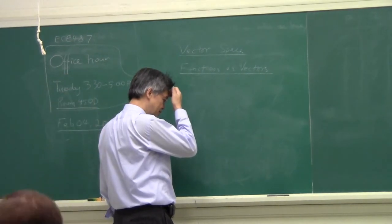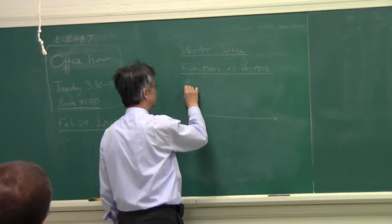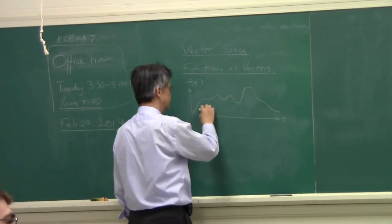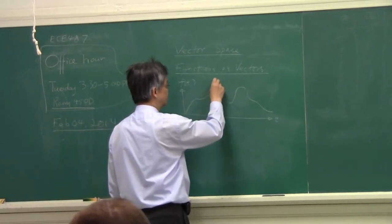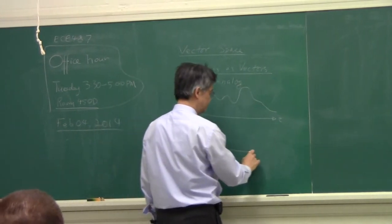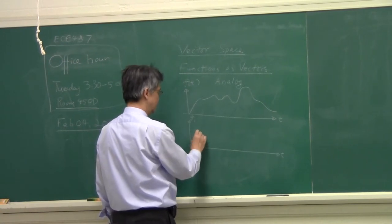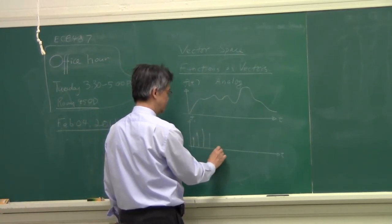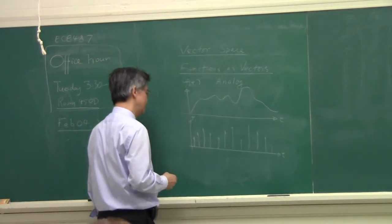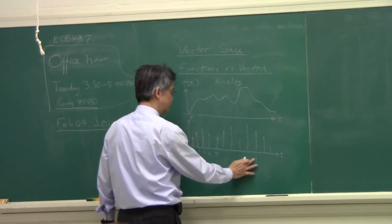In electrical engineering, you do have something that might be related to vectors. For instance, you have a function of time, and that function of time might look something like this. This is called an analog signal. In electrical engineering, we never store an analog signal as it is; we store it as a digital signal, digitized at certain locations, something like f(1), f(2), f(3)... f(j), or f(i).